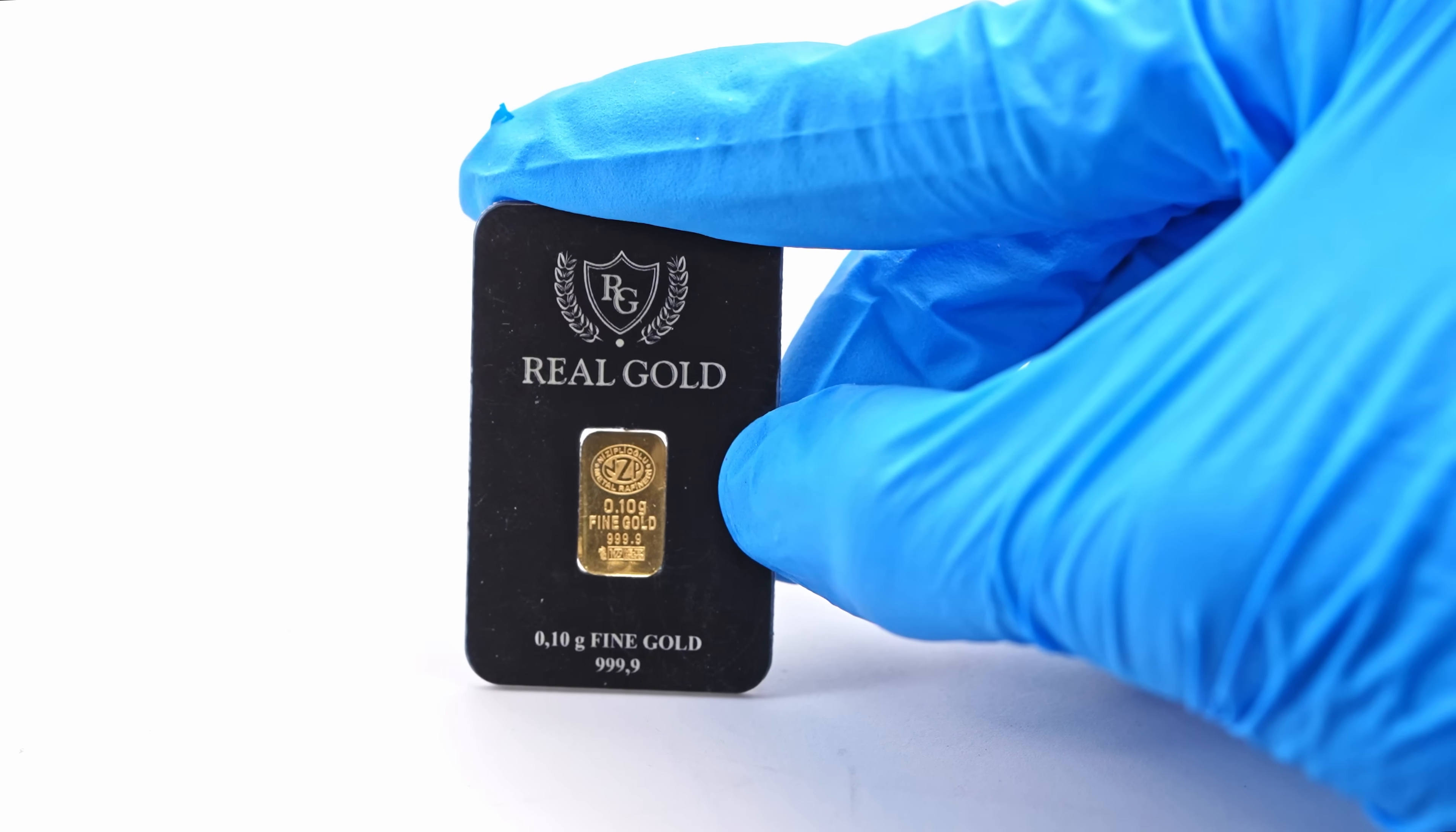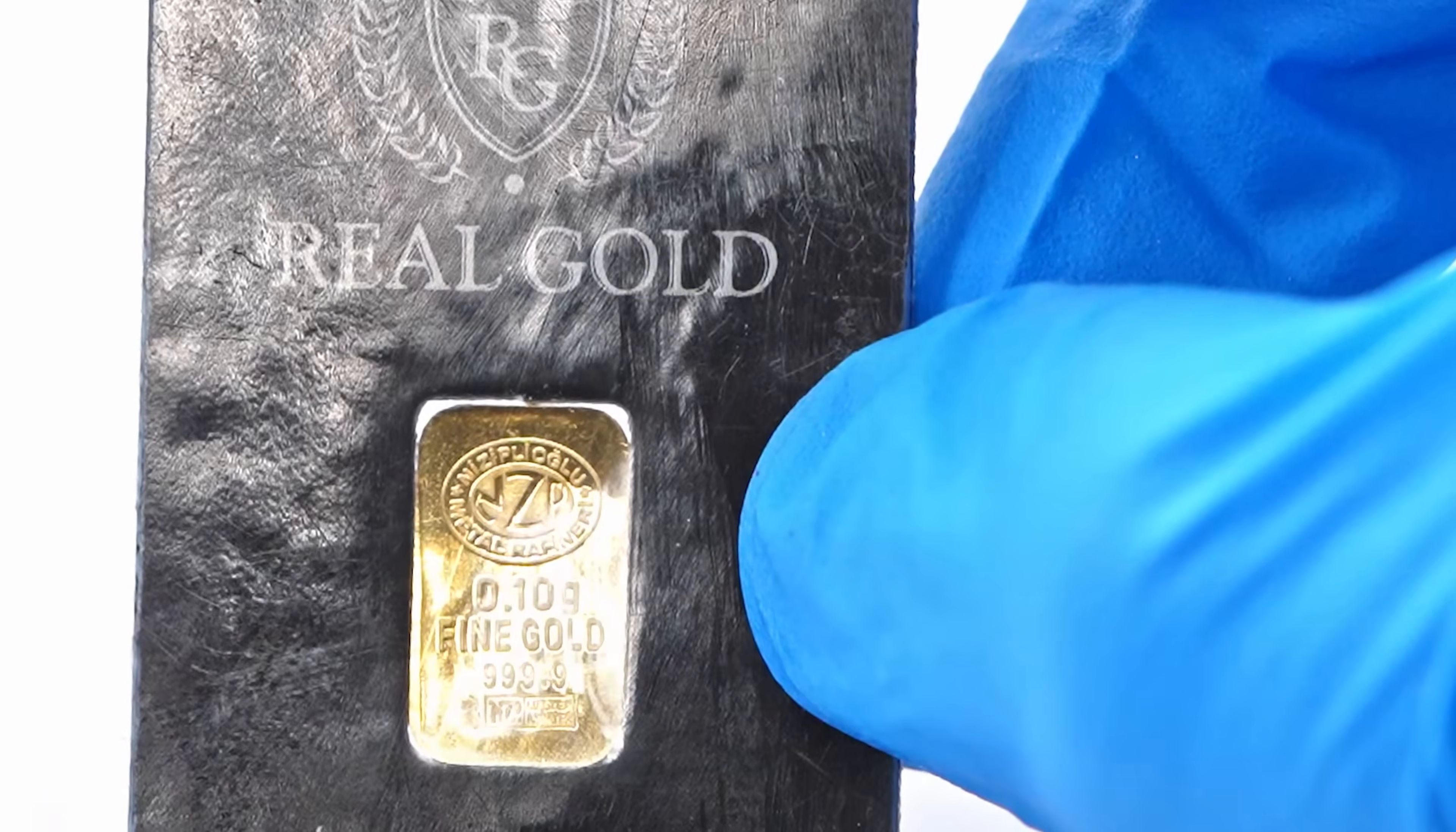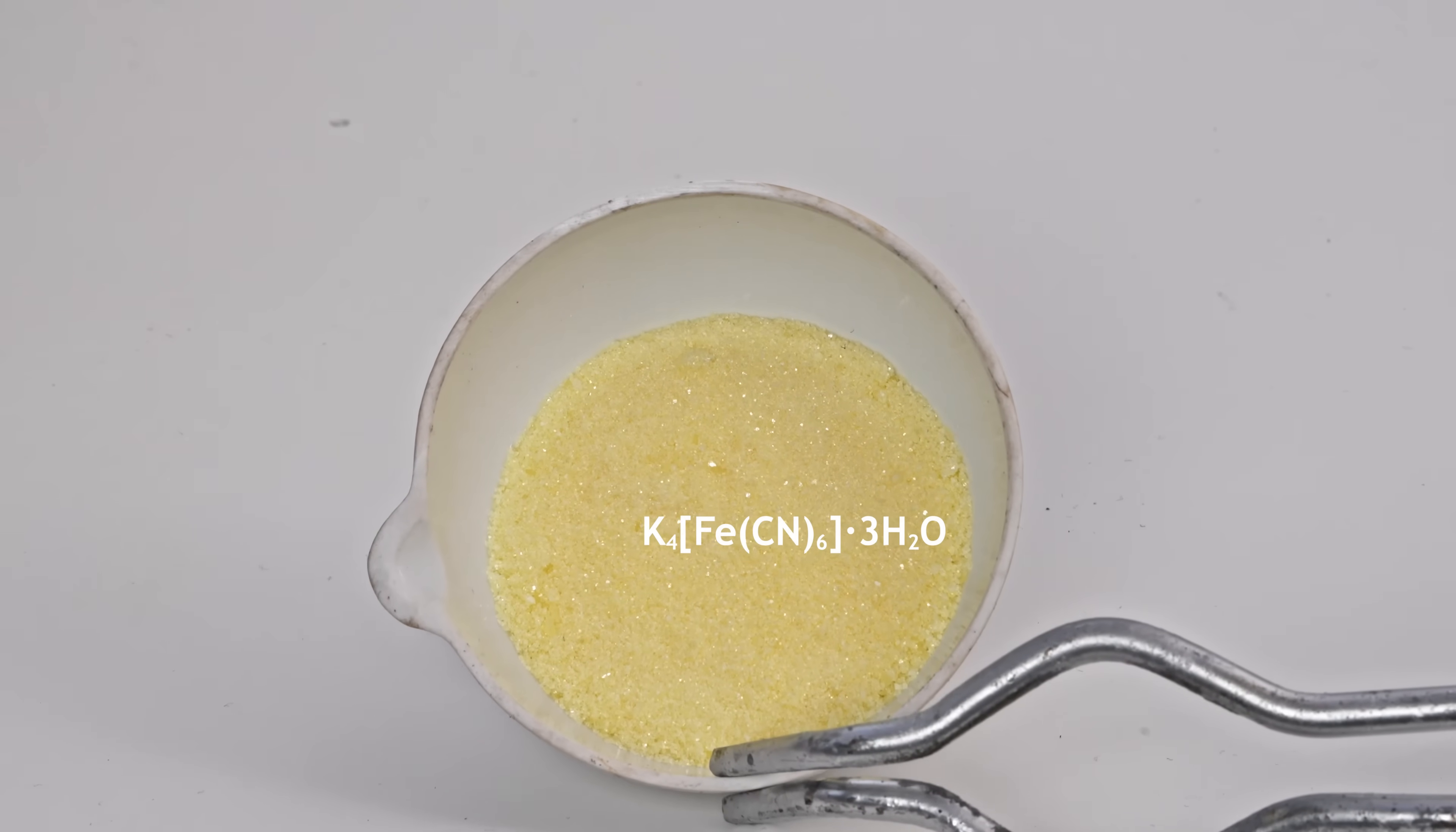Hey guys! In today's experiment, we'll try to dissolve this gold ingot in a solution of potassium cyanide. To start, I'll be making potassium cyanide from dry potassium ferrocyanide.